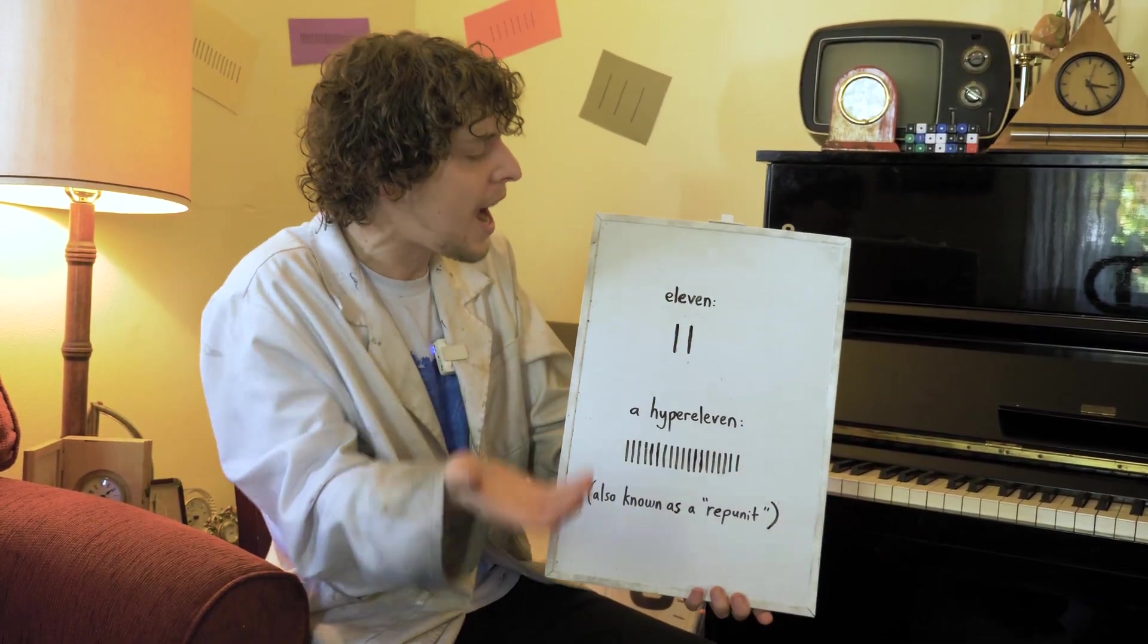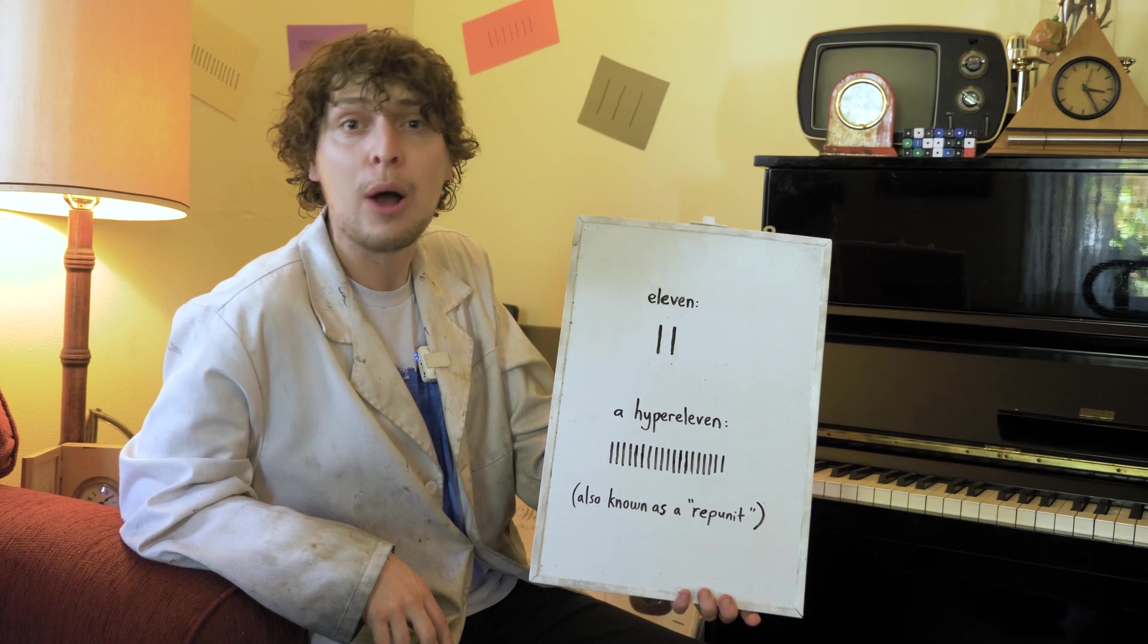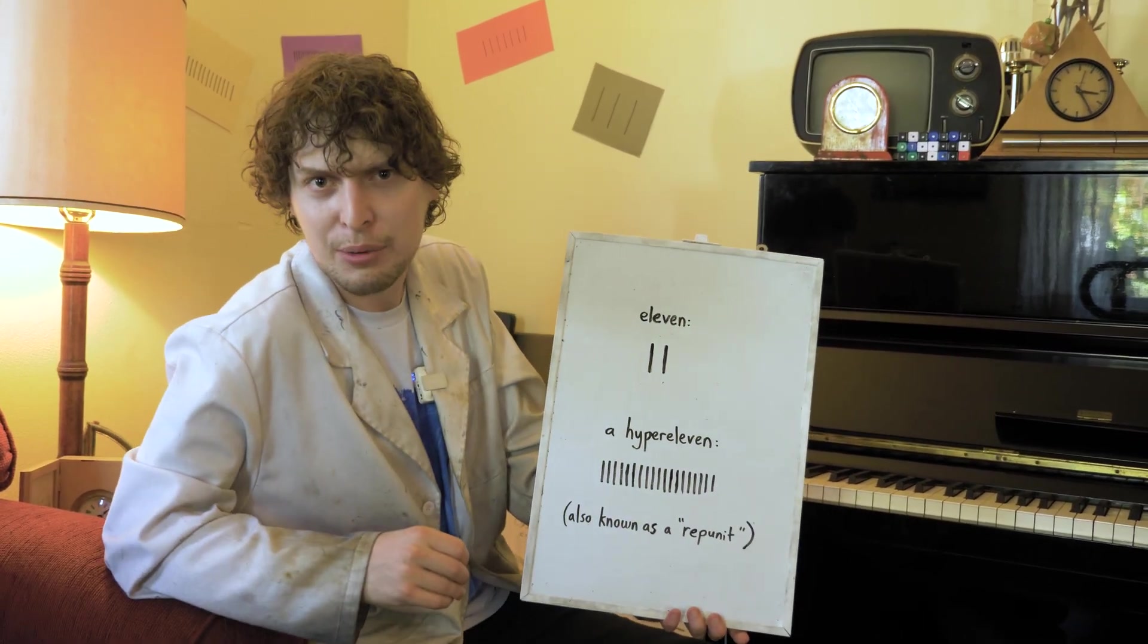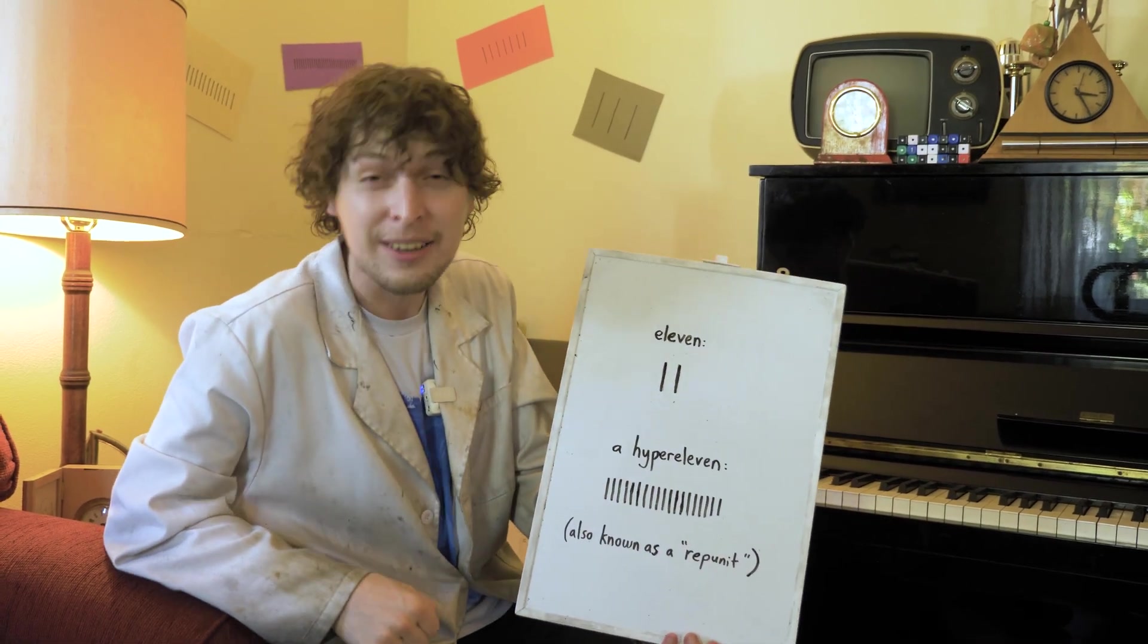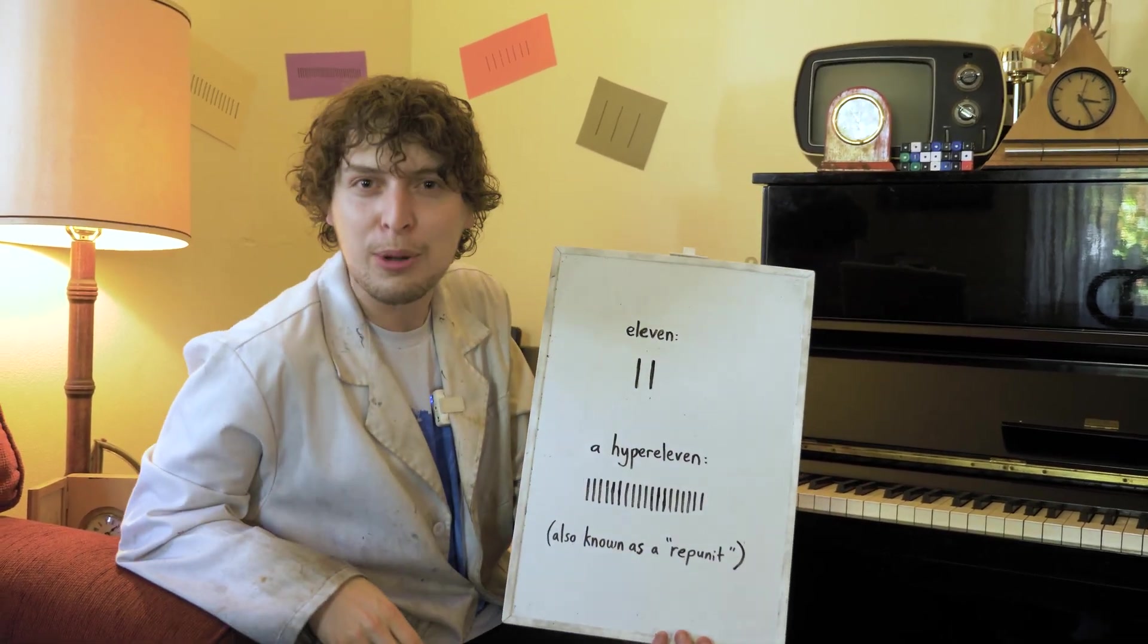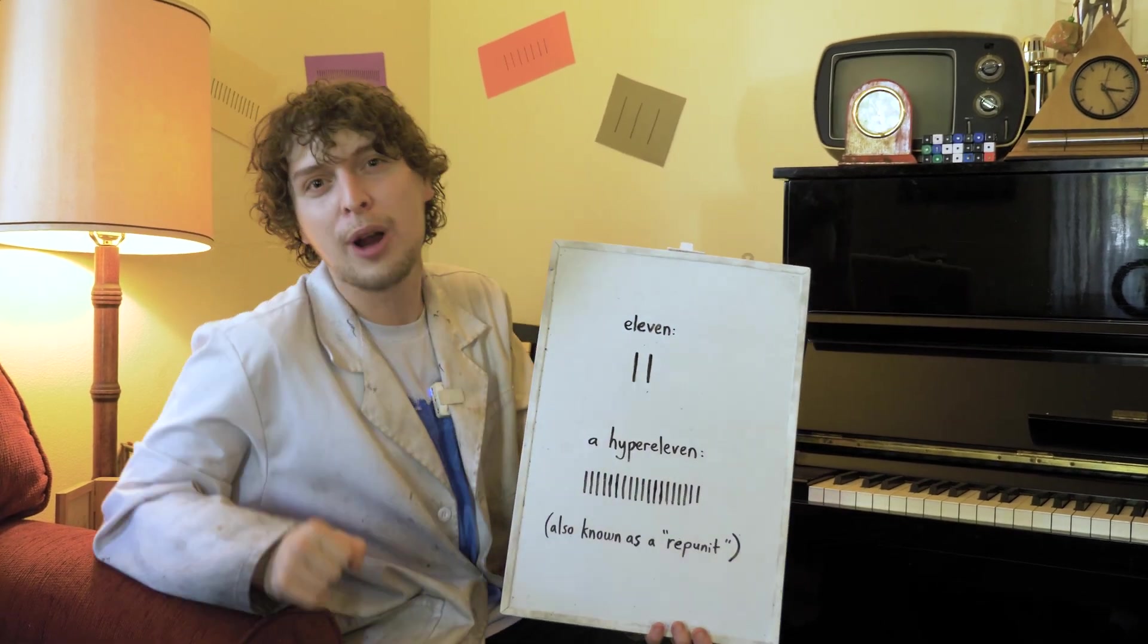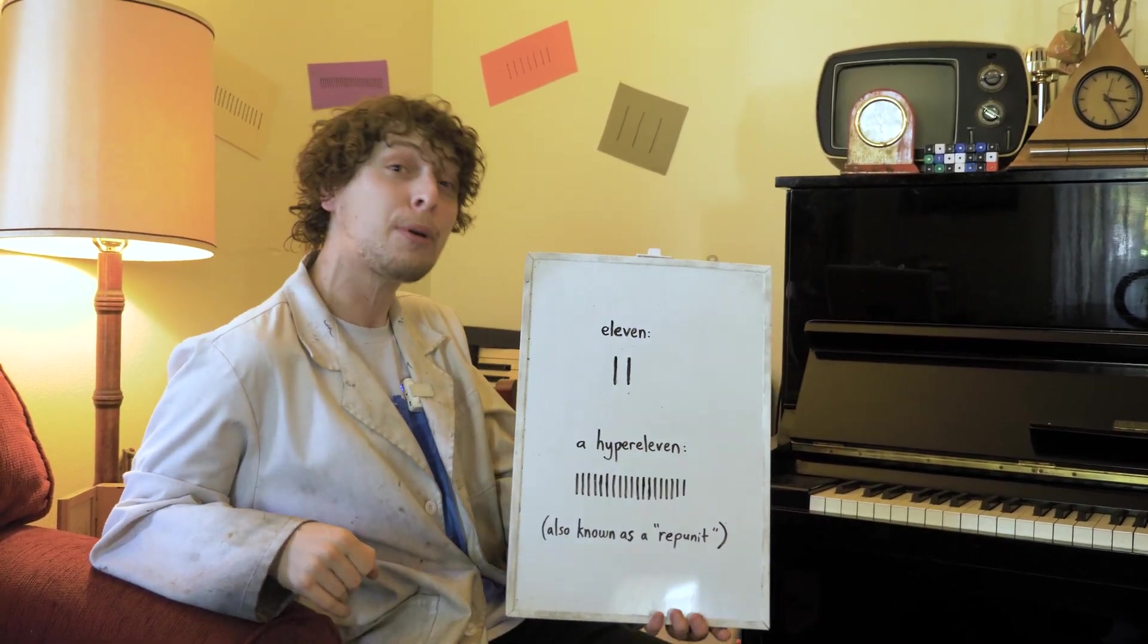Also 11 itself is kind of the flip of what we were talking about in our nines episode where things were one less than the base we were counting in, and this is one more than the base we're counting in. Plus we're even going to stumble towards some of those mersenne primes, the massive primes I mentioned in our episode about perfect numbers.